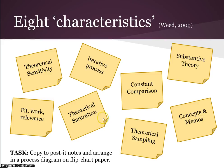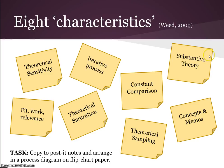Eventually we will reach a point of theoretical saturation. You go through enough iterations and enough constant comparisons to reach a point where you basically don't feel like you're finding anything new, where you've got some well-established core categories that fit together and explain the data. At that point, we have — or should have developed — a Substantive Theory, which is the end product of a Grounded Theory. It's a theory grounded in and anchored in the data, and explains virtually everything you've collected.